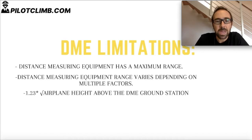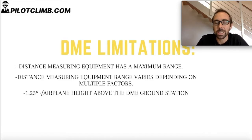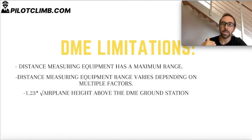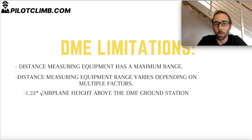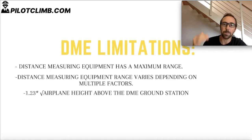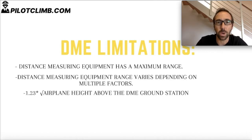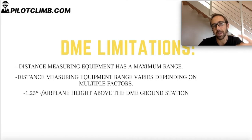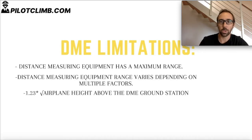The DME also has limitations. The Distance Measuring Equipment has a maximum range, meaning you need to be close enough to receive the signal. How close is close enough depends on several factors. The most important factors are the distance and altitude of the airplane — the higher the airplane, the greater the range and the sooner you can get information from the DME. Other factors include weather, whether it is night or day, and the orography of the terrain. If the DME is in a mountainous area, the range is impaired significantly, so you need to get closer before you can read the DME distance information.